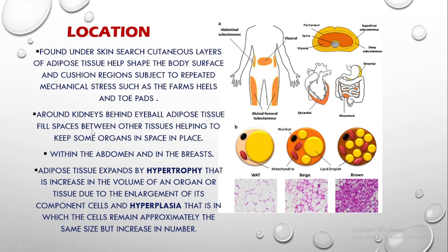This fat is also found around the belly, that is around the viscera. All the visceral organs are cushioned by fat cells or adipose tissue. As mentioned here, these are specially found around the kidneys, behind the eyeballs, and they also fill spaces between tissues because all these organs have to be kept in place. Females have more fat in the breasts and within the abdomen there is also a lot of visceral fat.